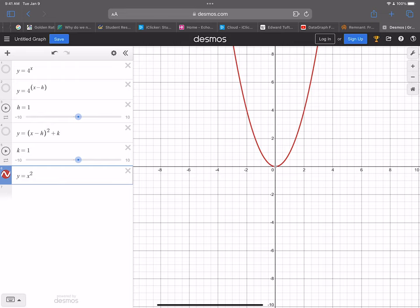I've graphed y equals x squared. That's a parabola. That's what we would call a parent function. Not a parent, but a parent, mom and dad, parent function.